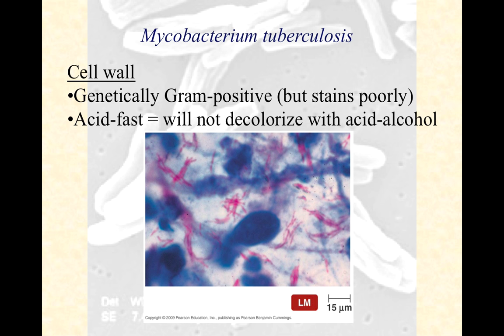But you wouldn't find nocardia in the lungs in a sputum sample. So acid-fast staining is particularly important when we suspect tuberculosis and we have a sputum sample, so we can look for these acid-fast long bacilli.